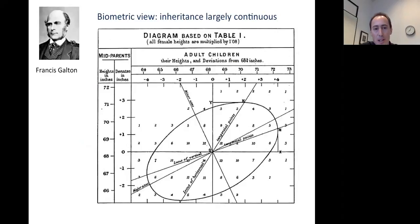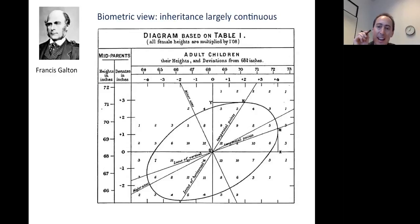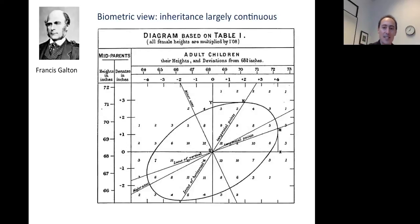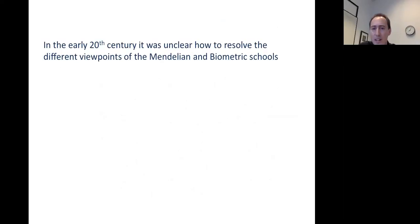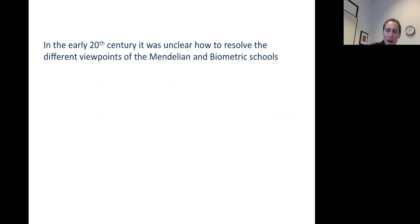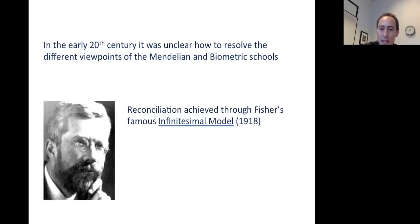Notably from Francis Galton, who was Charles Darwin's cousin, he studied traits including height. This plot is actually the first ever scatter plot, showing the distribution of heights of children as a function of the heights of their parents. He invented the statistical procedure of regression to study these data. When Mendel's work was rediscovered in 1900, it was really unclear how to resolve the different views from the Mendelian school, thinking of genetics as discrete switch-like atomic behavior, versus the biometric school, thinking of inheritance of continuous phenotypes.